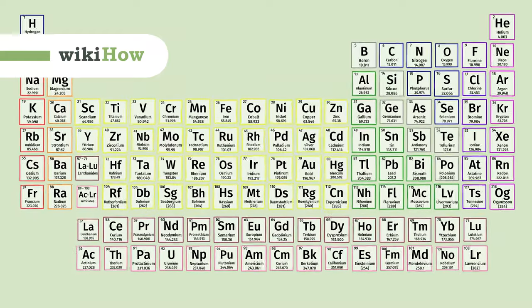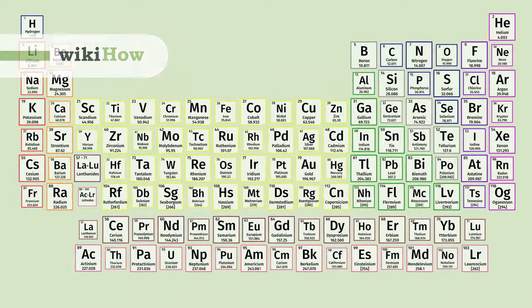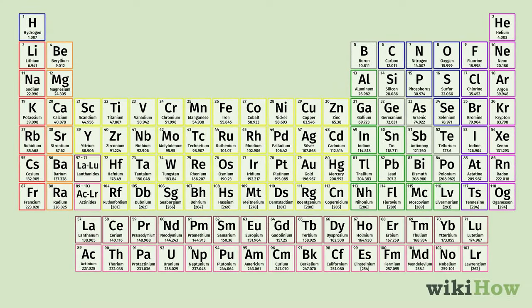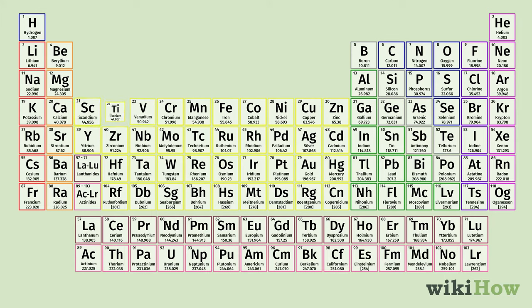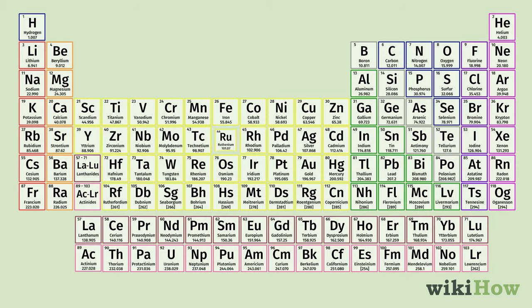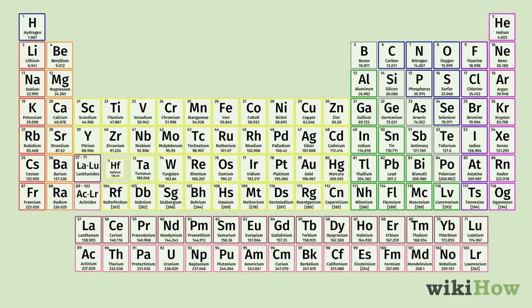The periodic table can seem a little daunting at first, but it's not too difficult to understand once you learn the basics of how it works. When you're reading the periodic table, move across the table from top left to bottom right. As you move across the table, the number of protons and the atomic mass of each element increases.